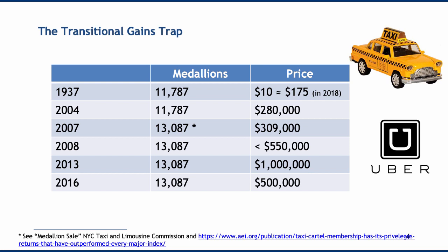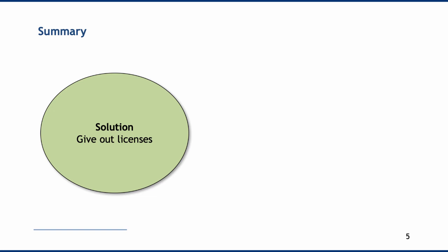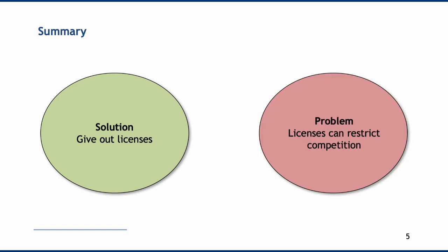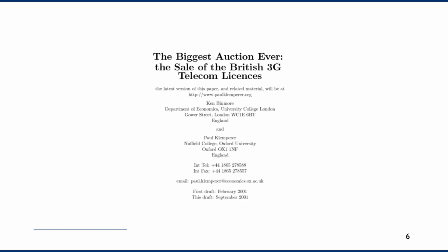In lots of cities, taxi cartels have been able to prevent Uber from entering the marketplace and competing with them. In some cases, we can say that Uber is actually a very good metric to see how open to competition a city is. To summarise: the Coase theorem tells us that we can solve commons problems by giving out licences, and that it doesn't actually matter who we give those licences to — the market process will ensure they move to their highest valued use. The problem with the transitional gains trap is that those licences generate interest groups that have an incentive to prevent competition. A really interesting exercise is to look at famous examples such as the 3G telecom licence auction and understand the extent to which the Coase theorem and the transitional gains trap apply.